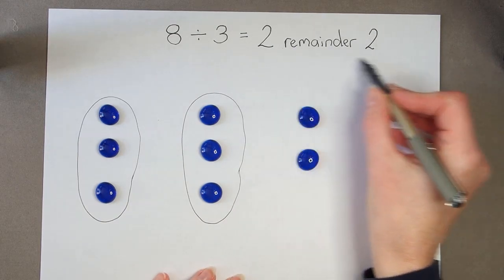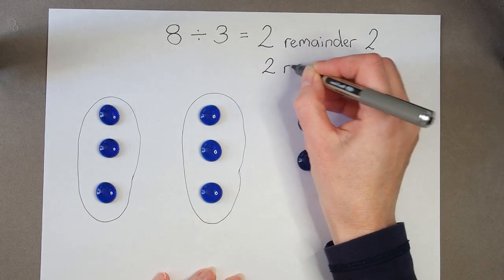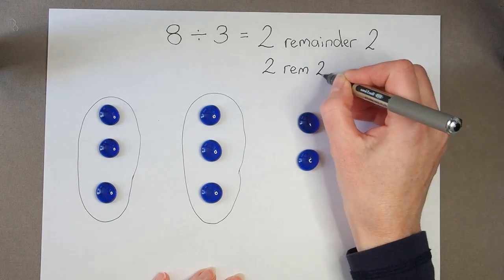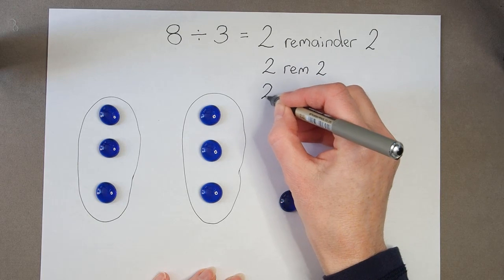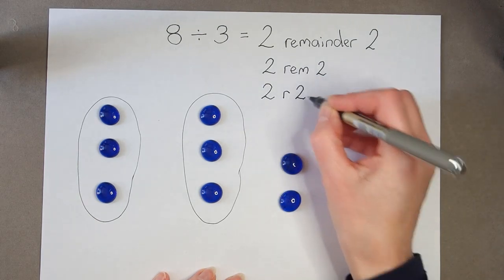I can write it as 2 remainder 2, or quite often we would write either 2 and rem 2, or even just 2 with an r to mean remainder 2.